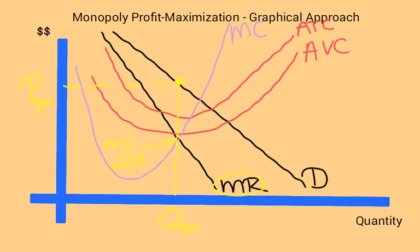There's one more thing we can do, and that is to identify the profit area. Now if you look at QPM, and you go straight up to the average total cost, that gives us the cost per product produced. If we draw a line straight across here, we would get the average total cost for the profit maximizing quantity.